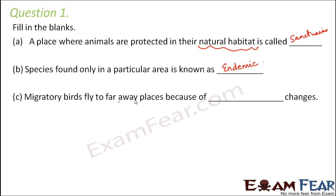Migratory birds fly to faraway places because of climatic changes. These are birds which change their shelter as environmental conditions change. In some regions the climate changes seasonally, so these birds fly away from that location and move to a new location where there are favorable climatic conditions. So their main cause of migration — movement from one place to another — is climatic changes.